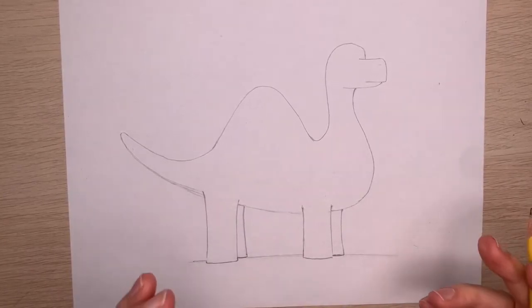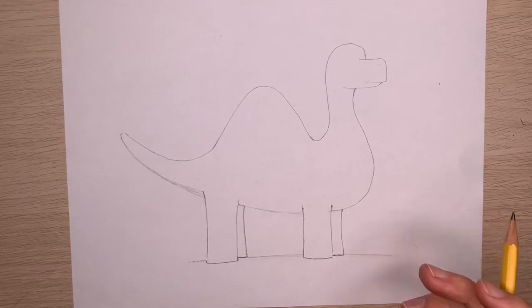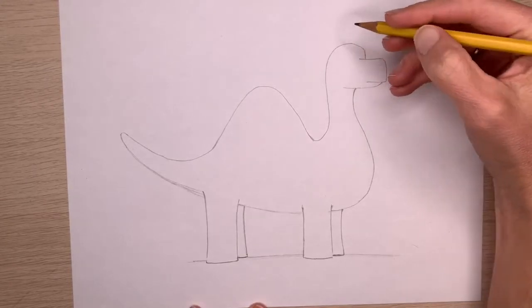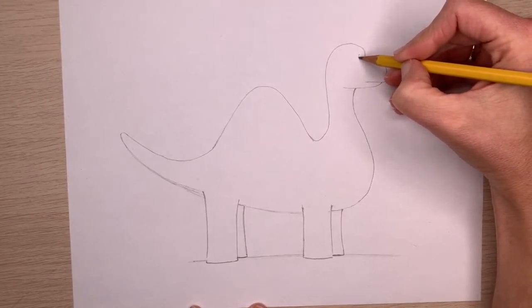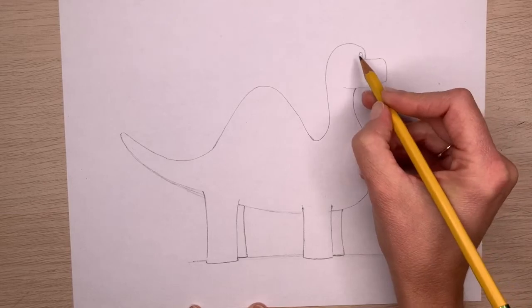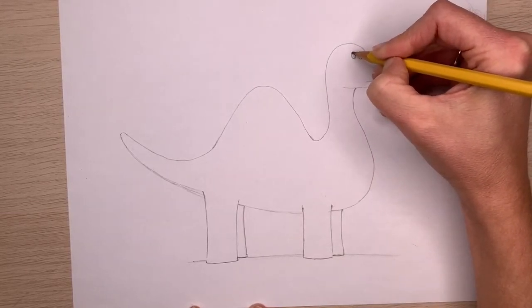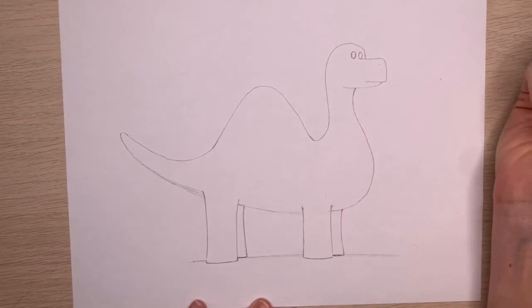Awesome job! Your dinosaur is probably looking totally different than mine. And I love that. I'm so excited. So let's draw the eyes. One eye is going to be on that nose line that we drew. And the next one will be to the left of it. Just make sure that they're about the same size.